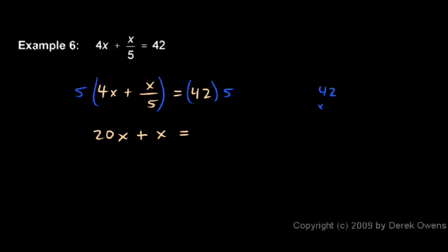Let me work that out. 42 times 5, 5 times 2 is 10, 5 times 4 is 20, and 1 is 21, so I have 210.